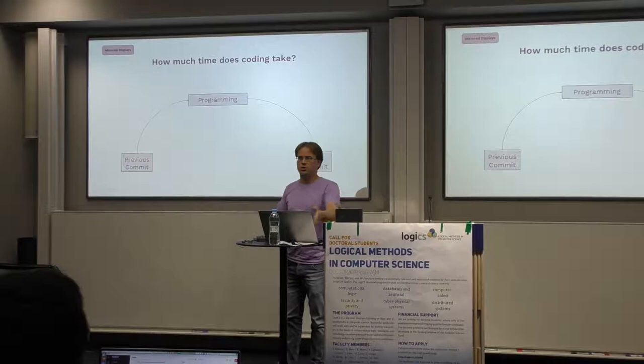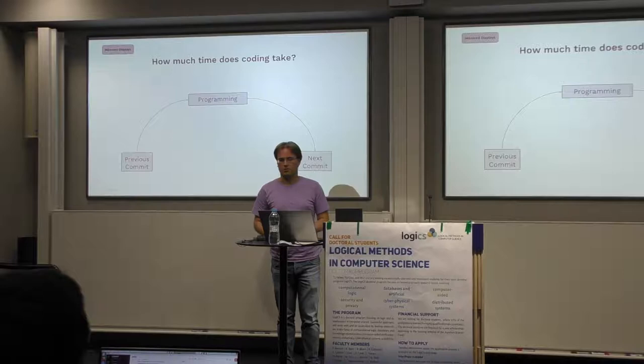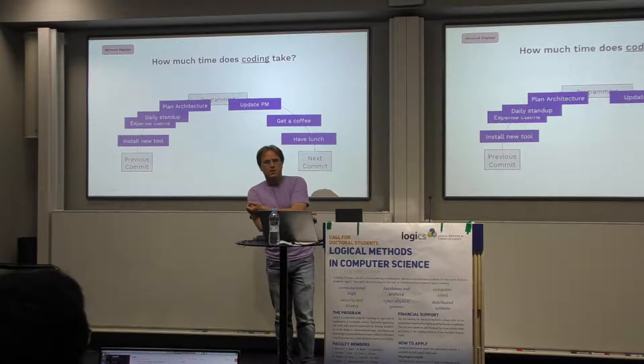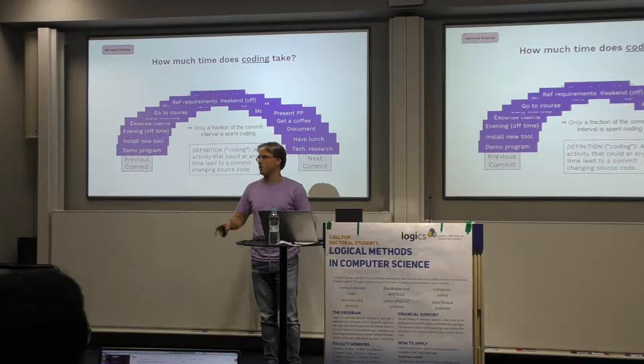For open source projects, commits are public so there's lots of data to train on. If you've got a commit at 9 o'clock and another at 11 o'clock, you would guess there's maybe two hours of programming work going on between them. But if you guess that, you would probably be wrong. It's hard to get reliable numbers, but there's a broad consensus that software developers only spend a tiny fraction of their time actually writing code.